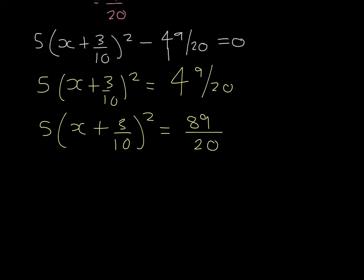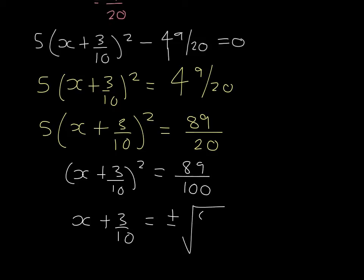Then x plus 3 tenths squared equals 89 over 20 divided by 5 which is 89 over 100. x plus 3 tenths then equals plus or minus the square root of 89 over 100. And x then equals negative 3 tenths plus or minus the square root of 89 over 100.